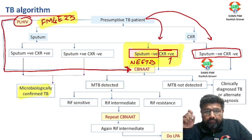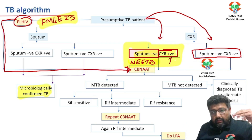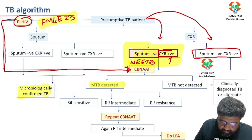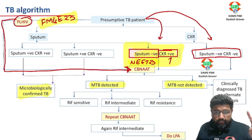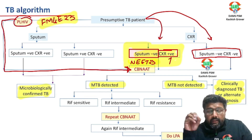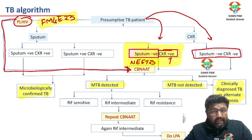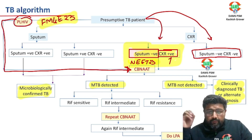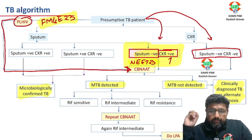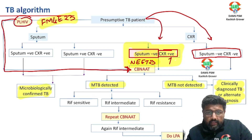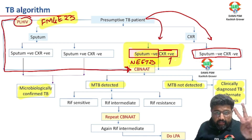Now, if CBNAAT is positive — TB detected — proceed accordingly. If TB is not detected on CBNAAT, you have two options: number one, make a diagnosis of clinically diagnosed TB. There are many scenarios where irrespective of other reports, we give a clinical diagnosis and start TB treatment.